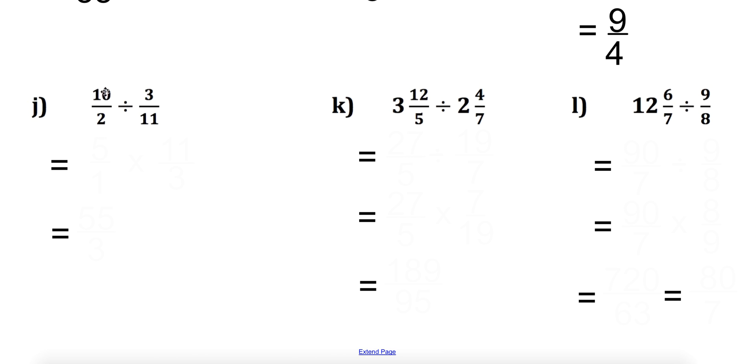Now if you look at this one, I'm going to reduce this 10 over 2 to 5 over 1. Same thing. And then I'm flipping the second fraction and changing the sign. And then I've already reduced because I did it up here.